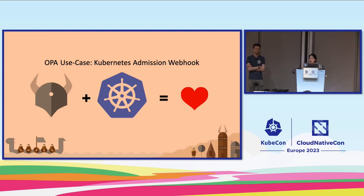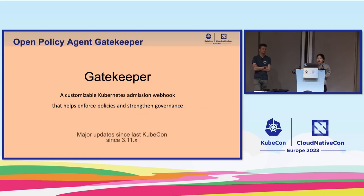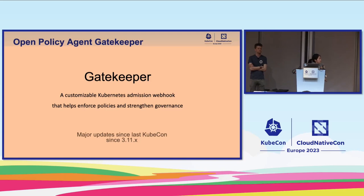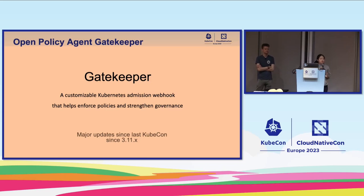For those of you already familiar with OPA, you're probably using it in your organization, and your users or customers may be asking how to use OPA with Kubernetes clusters — how to make sure workloads deployed to Kubernetes clusters are compliant to governance and company policies. That's where the Gatekeeper project comes in. It is a customizable Kubernetes admission webhook that uses the OPA engine embedded into Gatekeeper as part of the webhook, used to enforce policies and enhance governance in organizations.